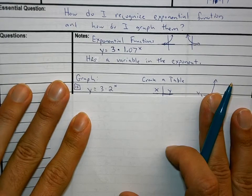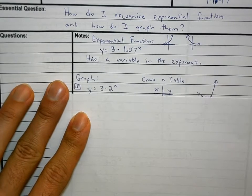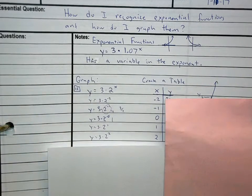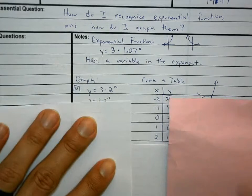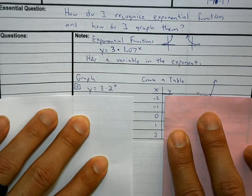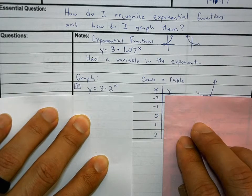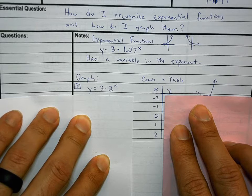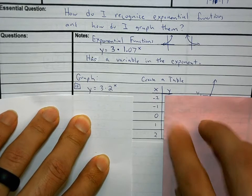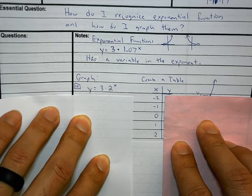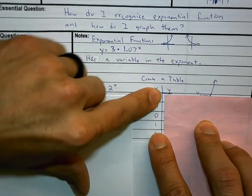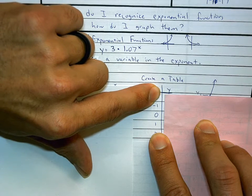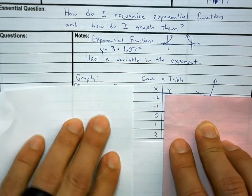If you are in a time crunch, use three numbers; otherwise use five. The five numbers I recommend are negative two, negative one, zero, one, and two. That will help you decide what your function is doing. You'll always plug those into x because x is your independent variable. If you're in a time crunch, use negative one, zero, and one — that's enough to figure out whether it's exponentially increasing or decreasing.